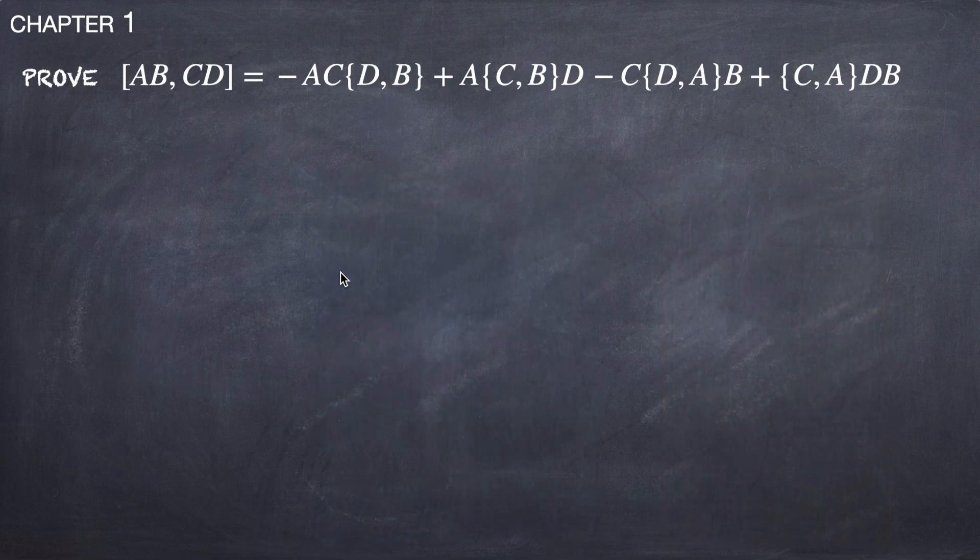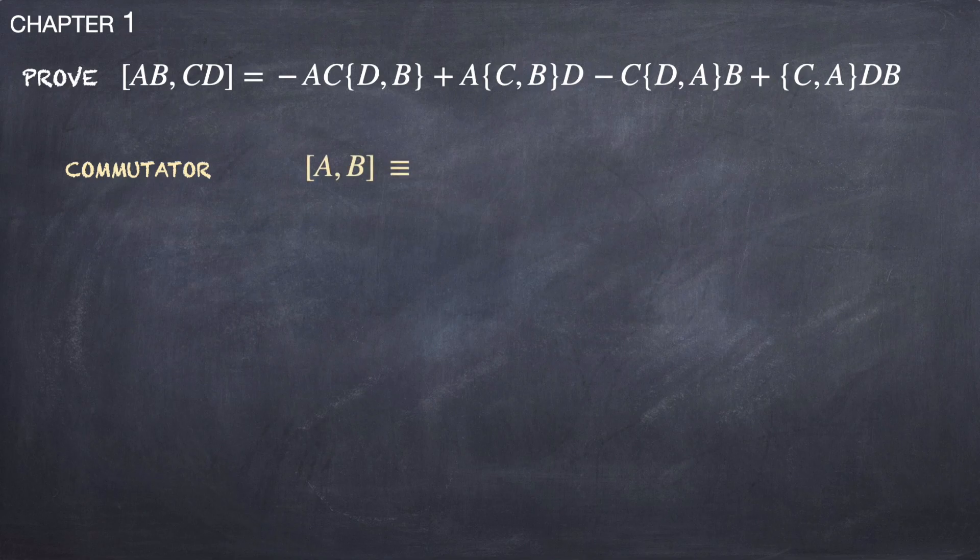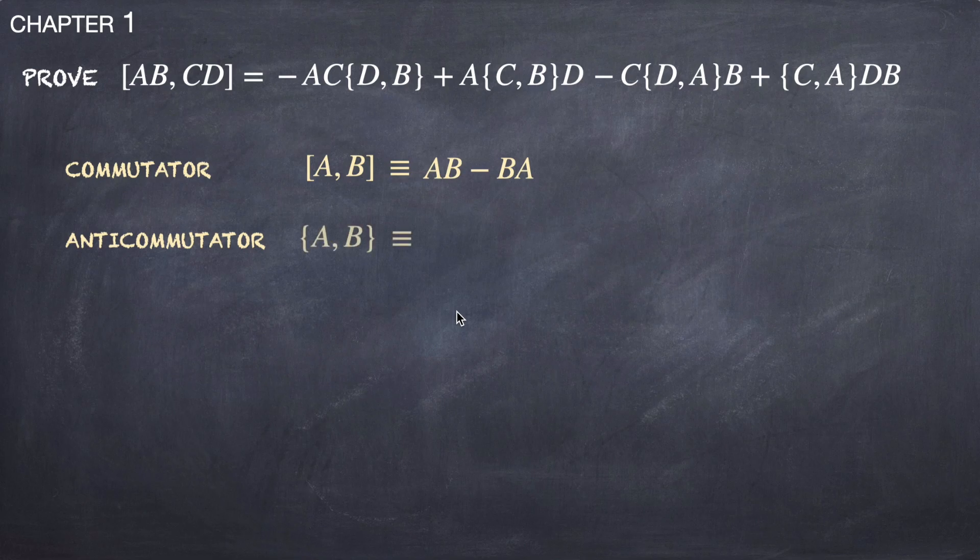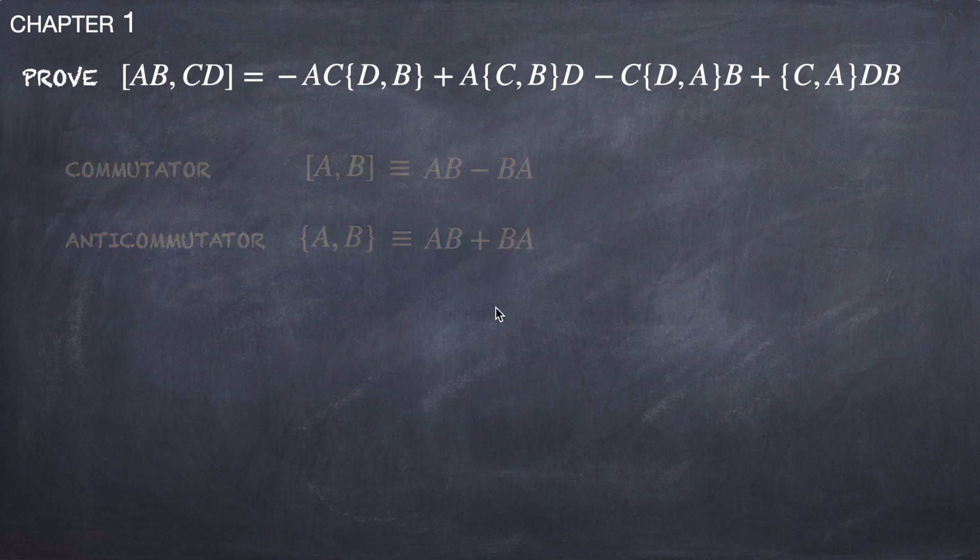First, let's remind ourselves that the commutator of A and B is defined as AB minus BA, and the anti-commutator of A and B is defined as AB plus BA.